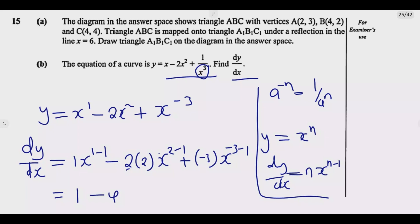Then 2 minus 1 is 1. So we're going to have X to the power 1, then negative 3, this becomes minus 3 times X to the power negative 3 minus 1 which is negative 4.